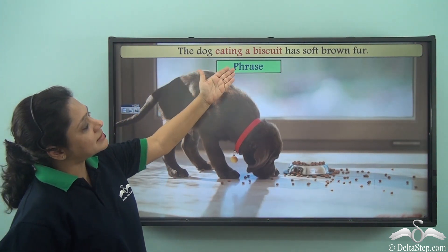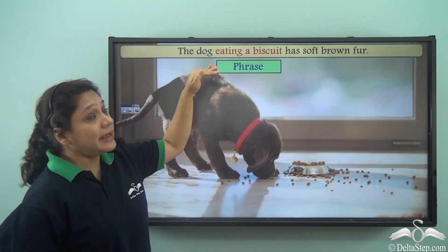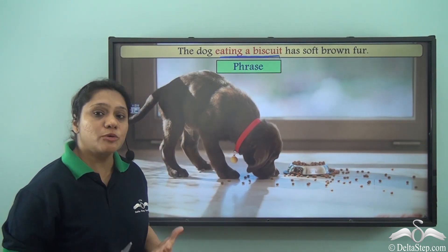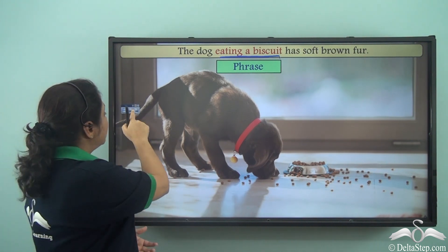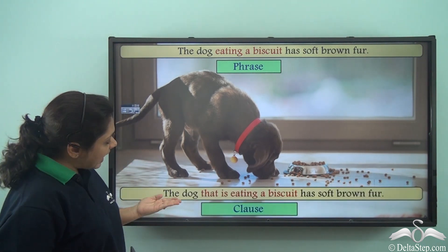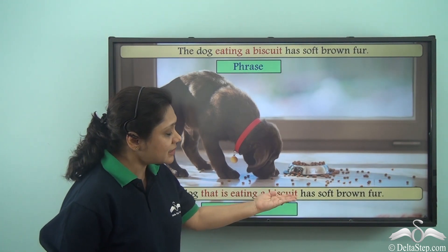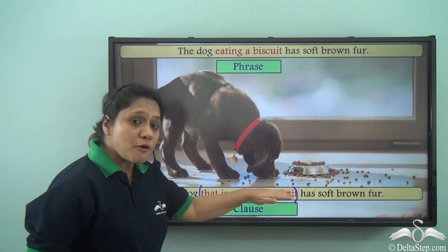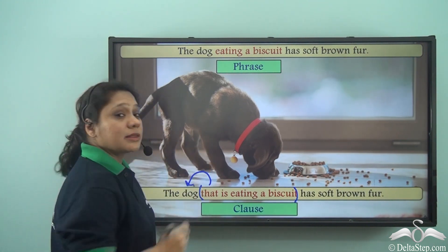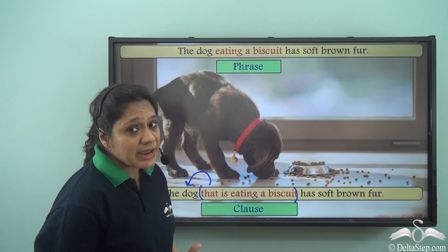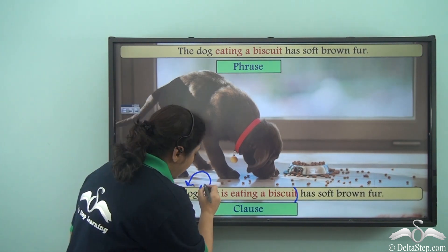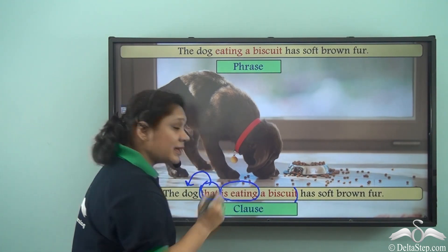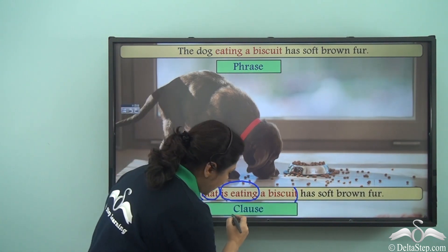So in 'The dog eating a biscuit has soft brown fur,' 'eating a biscuit' is a phrase because it has no subject doing a verb. And if we write the same sentence as 'The dog that is eating a biscuit has soft brown fur,' then 'that is eating a biscuit' is a group of words describing the dog and doing the work of an adjective. This group of words has a subject 'that' and the verb 'is eating,' so this group of words is a clause.